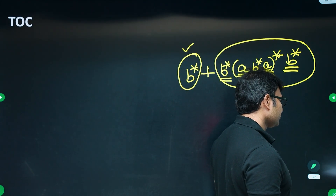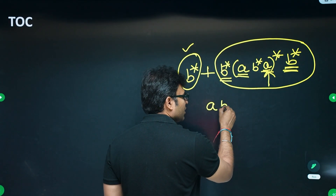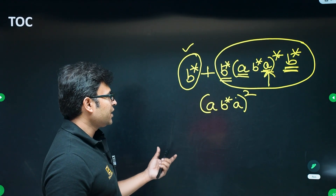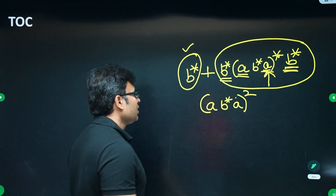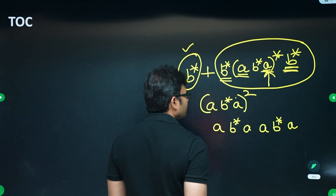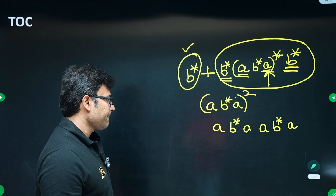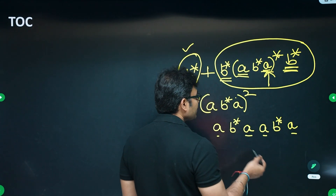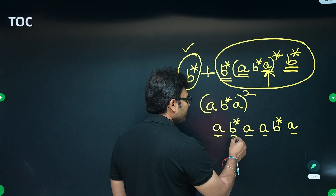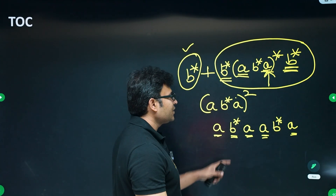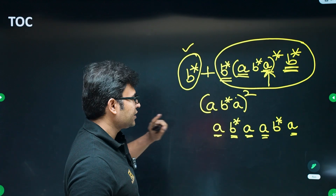Another student wrote ab*a to the power 2. Power notation is not a valid regular expression — you must write it out. This is actually ab*a ab*a ab*a ab*a, which only generates strings with exactly four a's in a specific pattern. It does not generate all strings with even numbers of a's, so it is not a correct regular expression for the language.